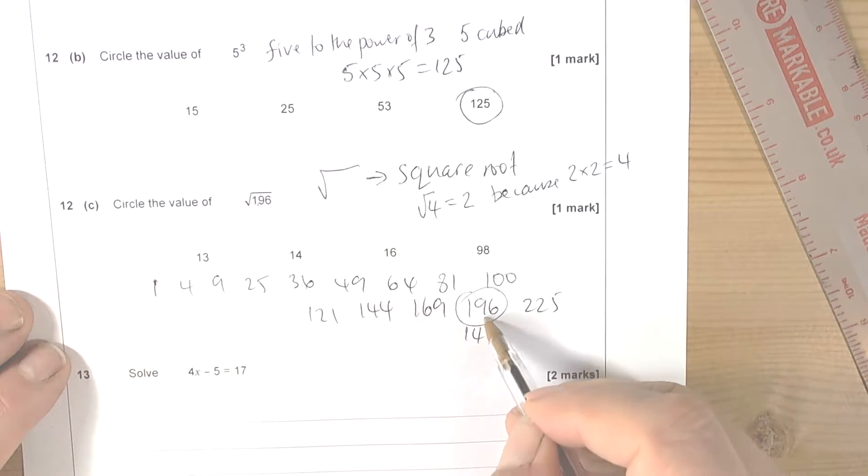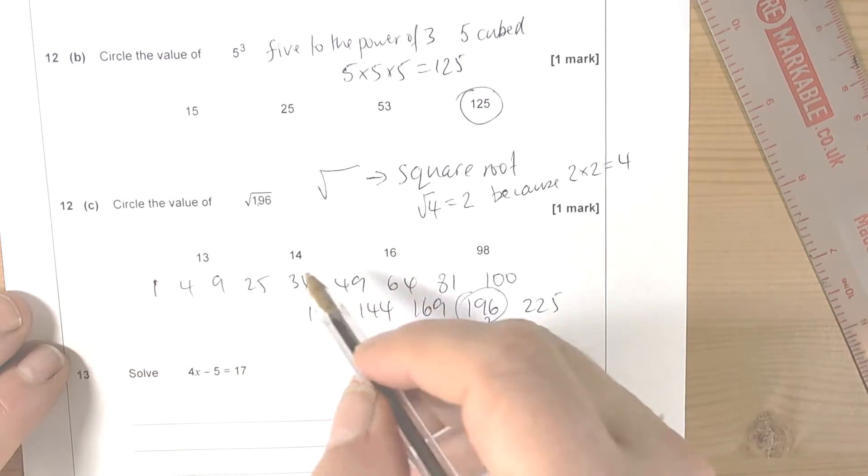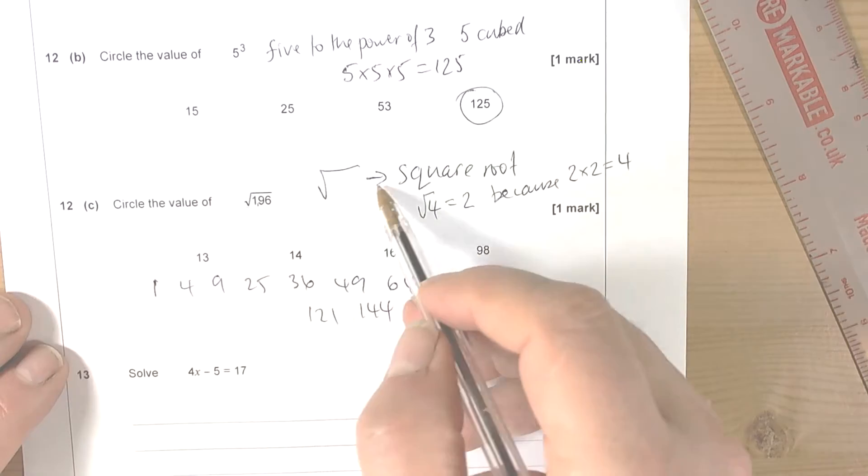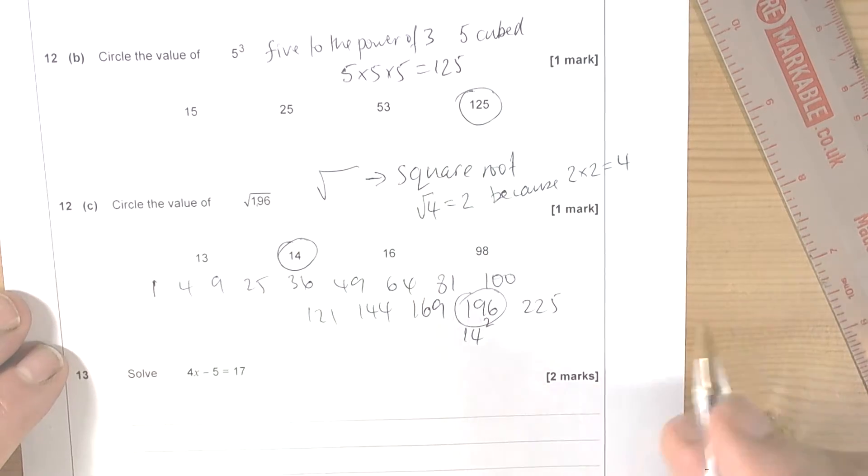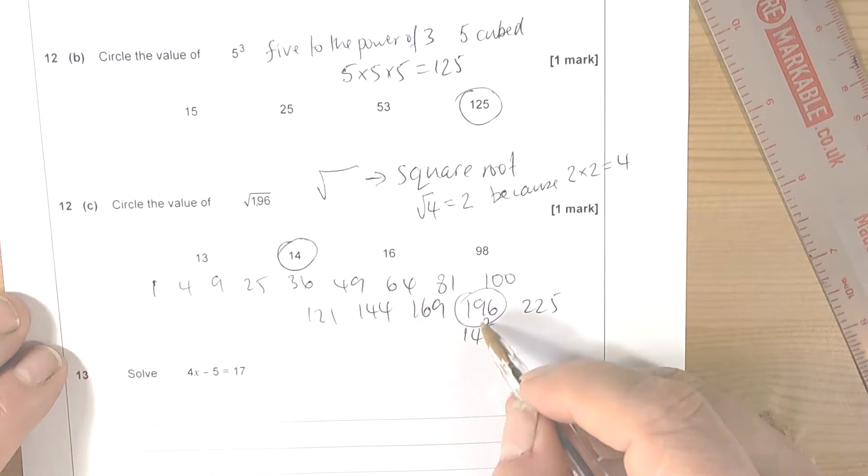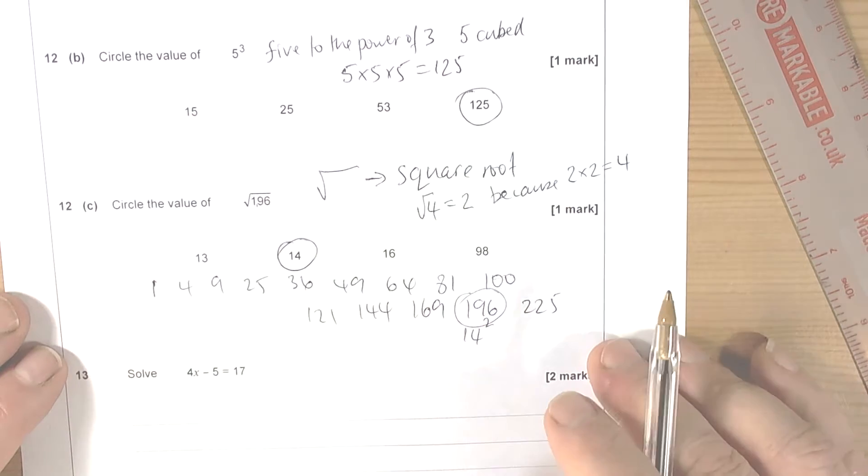So this is 14 squared. So when it says circle the value of the square root of 196, then it's going to be 14. 14 times 14 gives you 196.